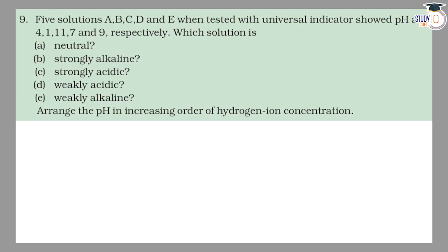Hello students, this is NCERT class 10 science, chapter 2, question number 9. Five solutions A, B, C, D, and E when tested with universal indicator showed pH as 4, 1, 11, 7, and 9 respectively.